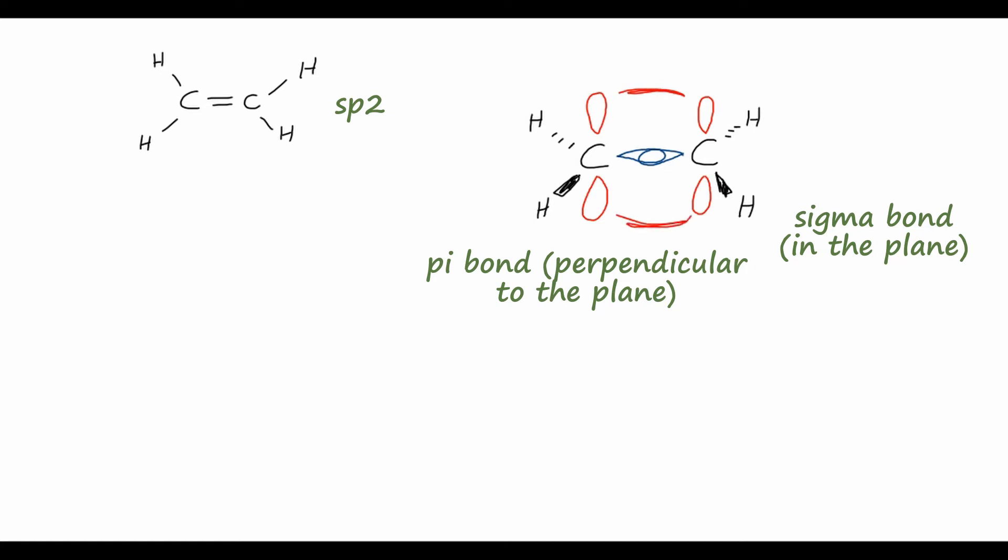And it's very important to remember that double bonds are indeed stronger than single bonds, so that's pretty self-explanatory, but pi bonds themselves are weaker than sigma bonds. So because of that decreased overlap with pi bonding, those are weaker than the in-plane overlap in sigma bonds.